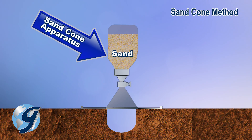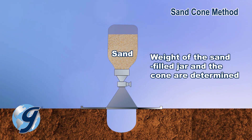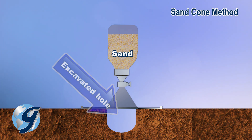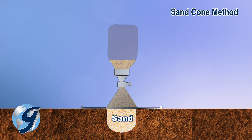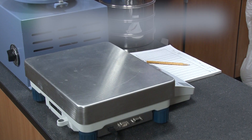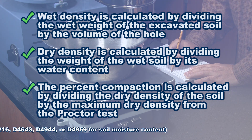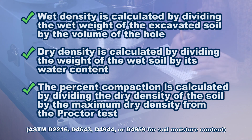Simply stated, the test is carried out with the apparatus and sand. The weight of the sand-filled jar and the cone are determined. A small hole is excavated on site and the sand cone apparatus is placed onto its base plate and over the hole. The stopcock is opened to allow the sand to fill the hole. The excavated soil and the apparatus with the remaining sand are collected, recorded, and calculated using the appropriate ASTM test specifications for a specified density or percent of maximum density.